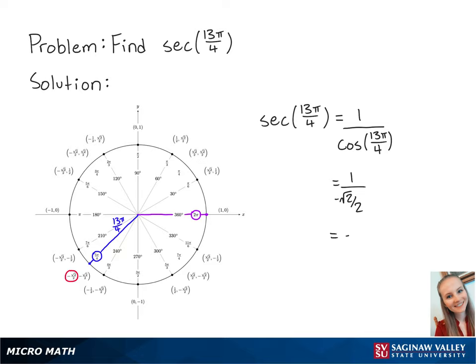If we simplify this, we will get negative 2 over the square root of 2.